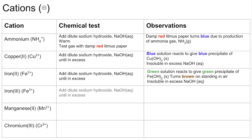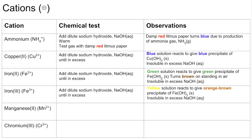Iron three plus uses exactly the same test. This time we have a yellow solution, and that reacts to give an orangey-brown precipitate of iron three hydroxide, which is also insoluble in excess sodium hydroxide.